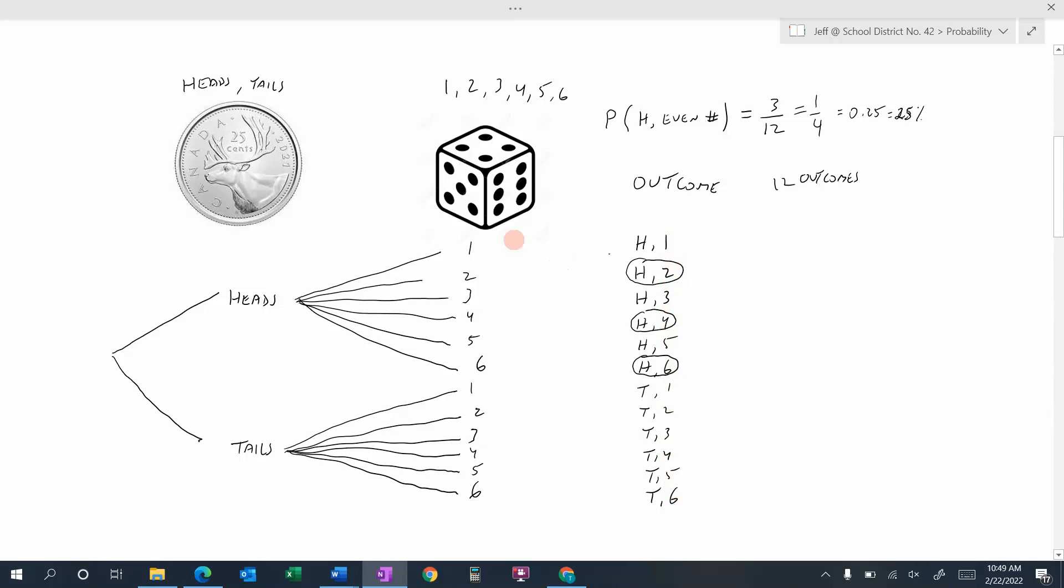And in this case, there was 12. We were flipping a coin and seeing if it was heads or tails, and then we were rolling a die and seeing if we got 1, 2, 3, 4, 5, 6. And so we could have heads in these six outcomes or we could have tails in these six outcomes. And we listed them over here and we got 12.